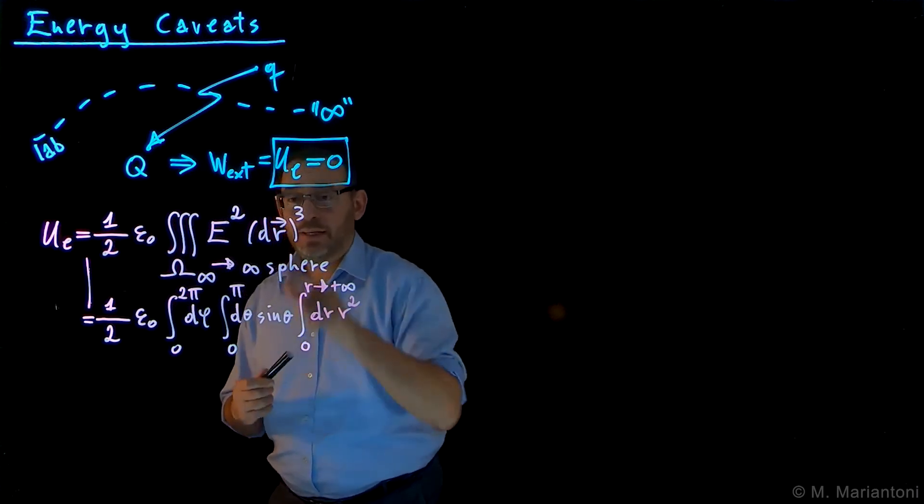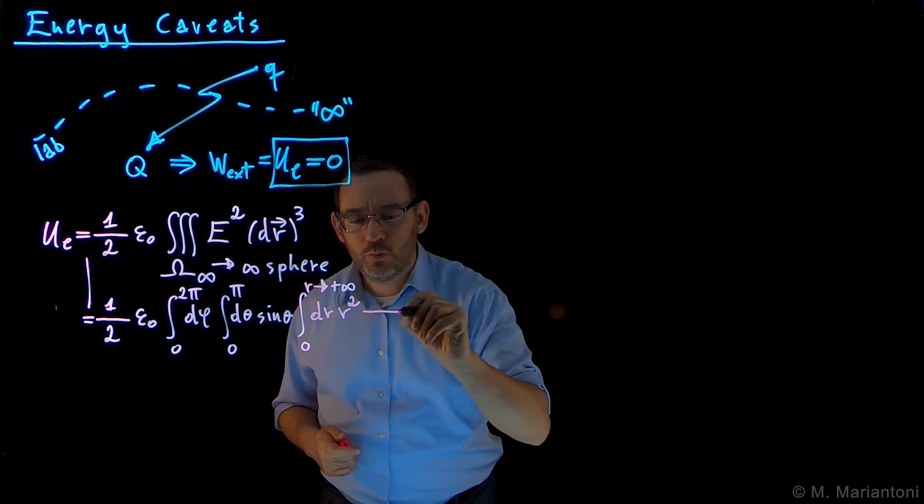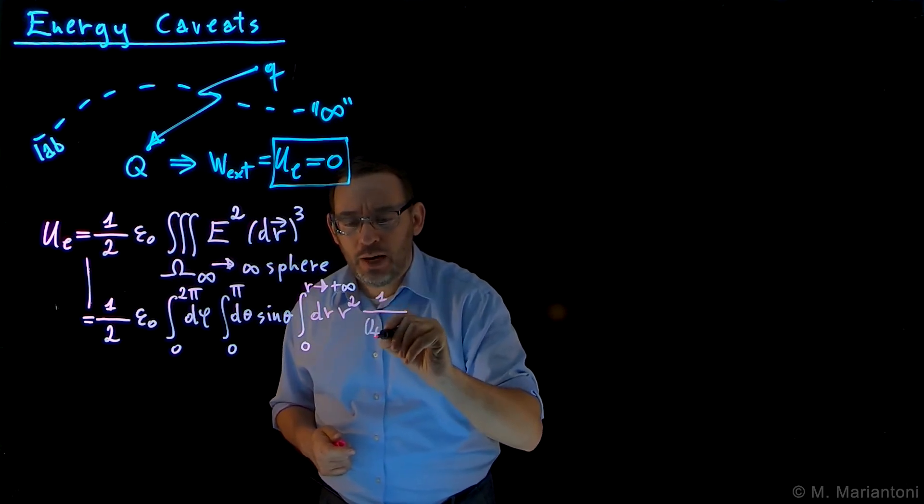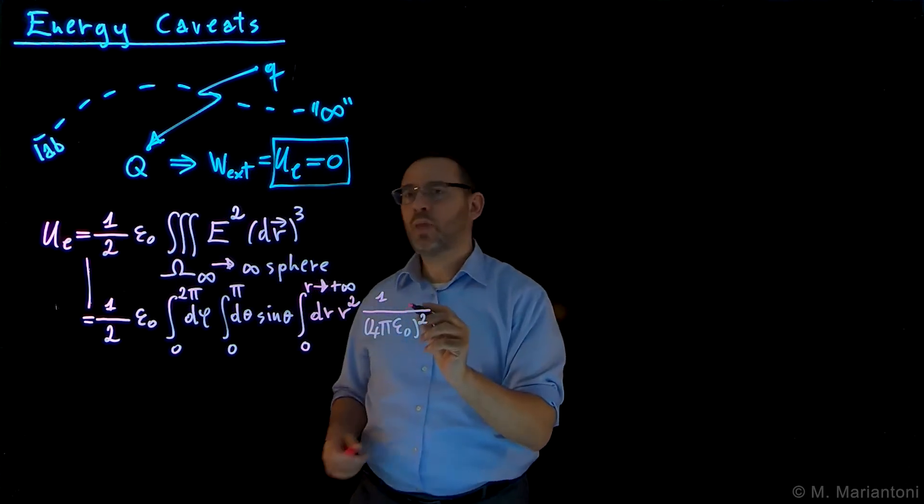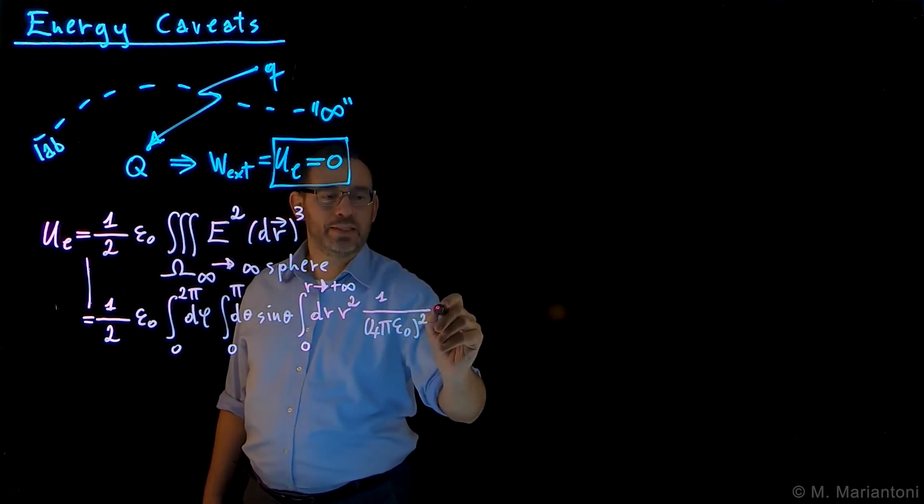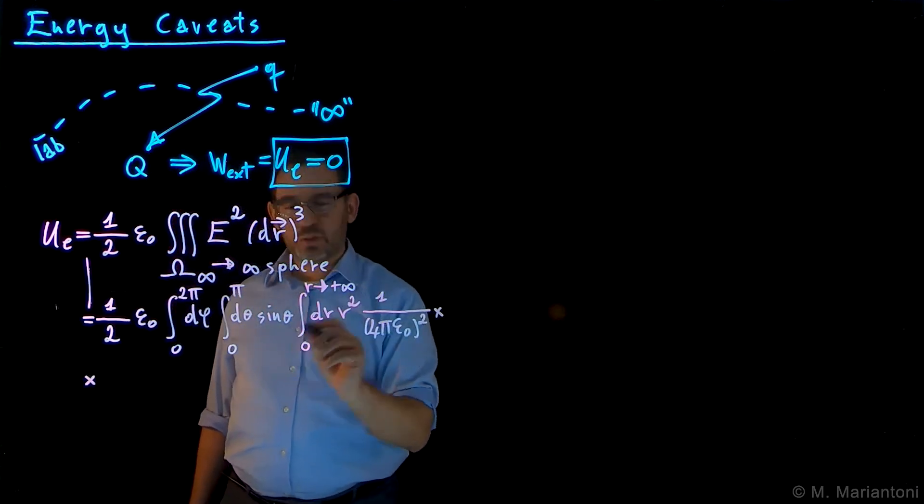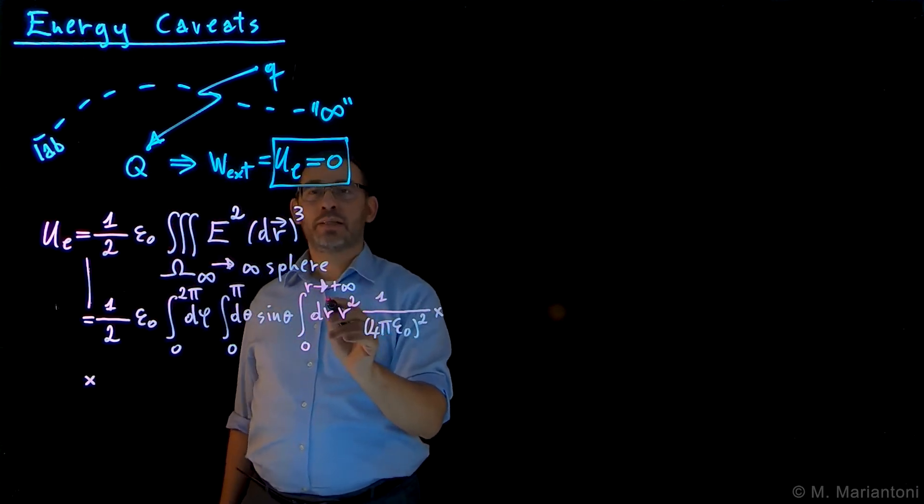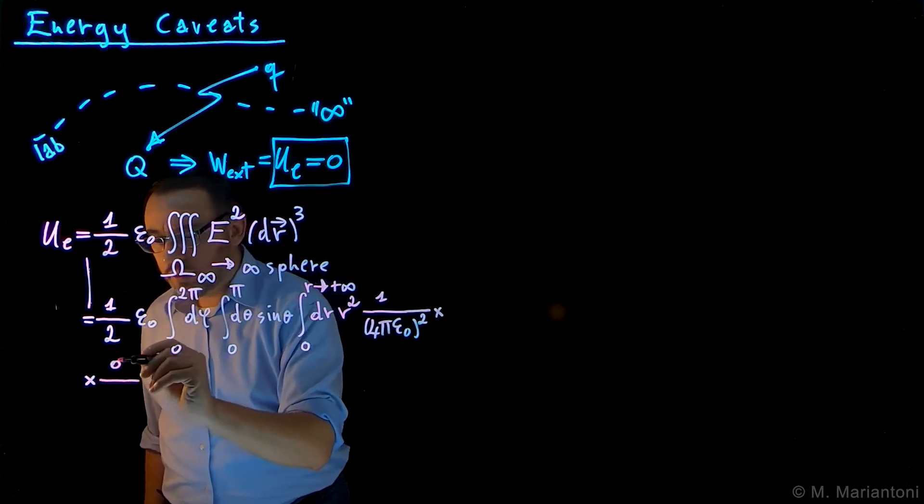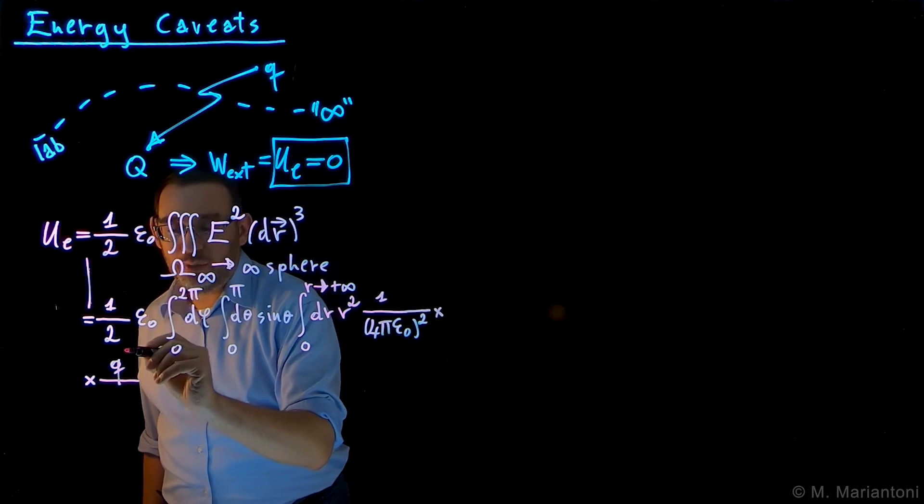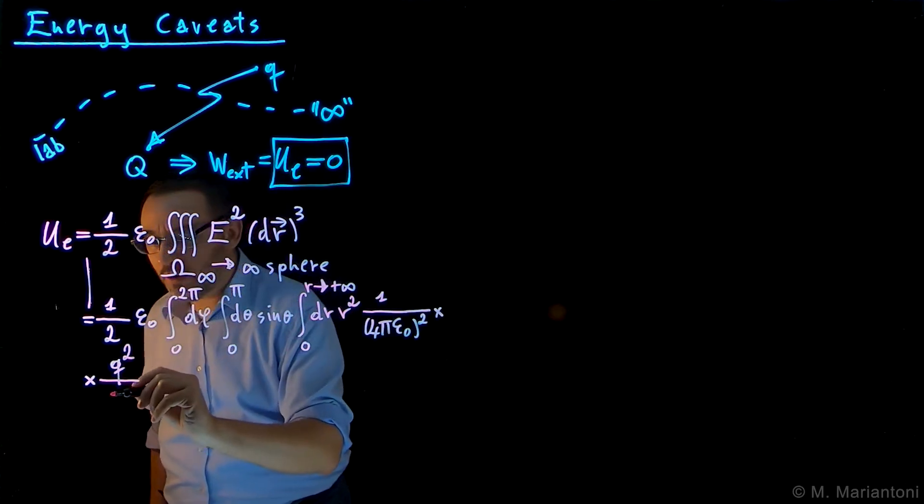So now we took care of the R cubed and one half epsilon naught. What about the square, not to forget that? It's 1 over 4π epsilon naught from Coulomb's law, but squared. What about the rest of the electrostatic field? Obviously it has to be this point-like charge Q divided by—which has to be squared, because again, E squared, divided by R squared squared, which is R to the power of 4.